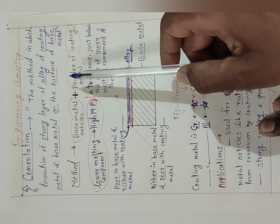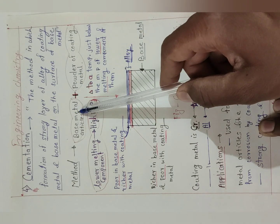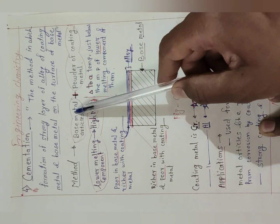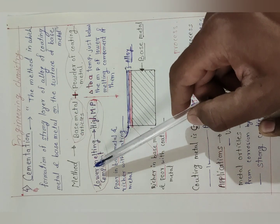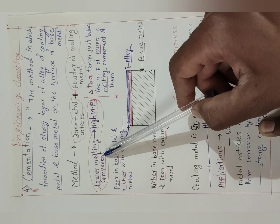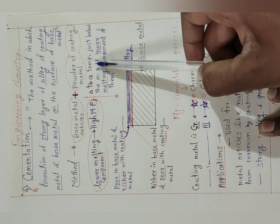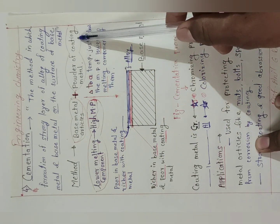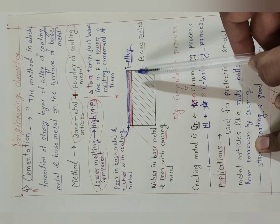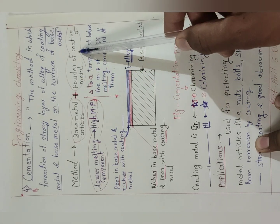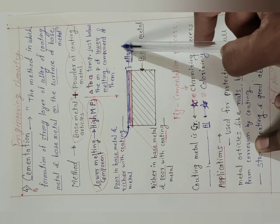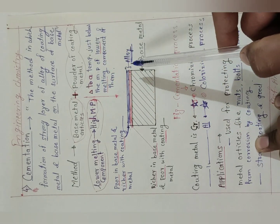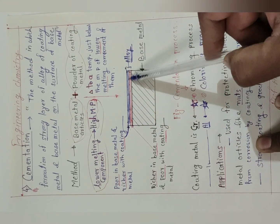For example, if the base metal melting point is 100°C and the coating metal powder melting point is 90°C, then we have to heat this packing just below 100°C, because 100°C is the lower melting component — meaning it melts last. After heating, the powder of the coating metal diffuses into the base metal. Through diffusion, the powder of coating metal enters the base metal, reacts with it, and produces an alloy — forming a mixture of coating metal and base metal, which is the alloy.